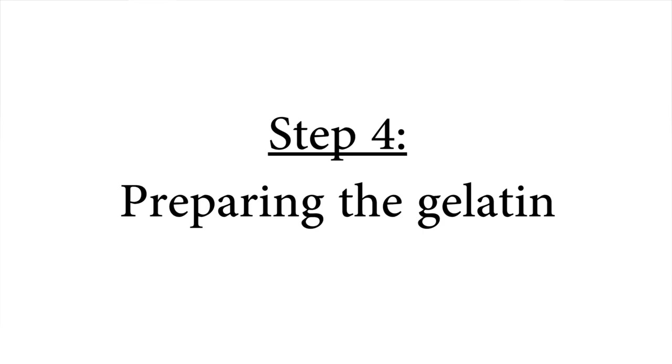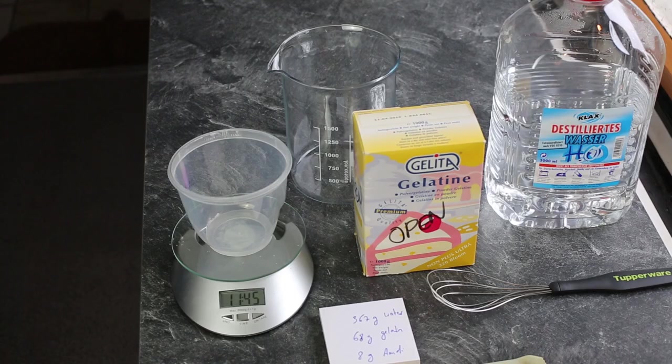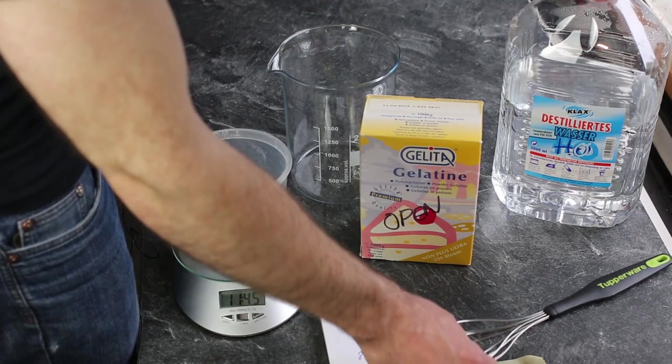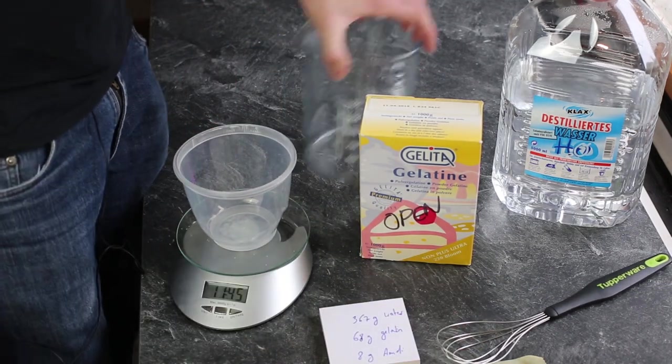Step 4. Preparing the gelatin. This is how I mix the gelatin that I will use to coat the glass. My formula today is 367 grams of water, 68 grams of gelatin and 8 grams of ammonium dichromate. This is a lot of dichromate and gelatin and will yield a rather thick emulsion. This recipe is optimized for using a low power green laser.